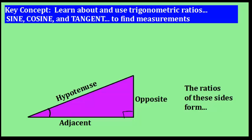As you already know, in a right triangle formed with the same angle measurement, the ratios of the opposite to hypotenuse, the opposite to adjacent, and the adjacent to hypotenuse are always the same no matter how big or small the triangle gets.